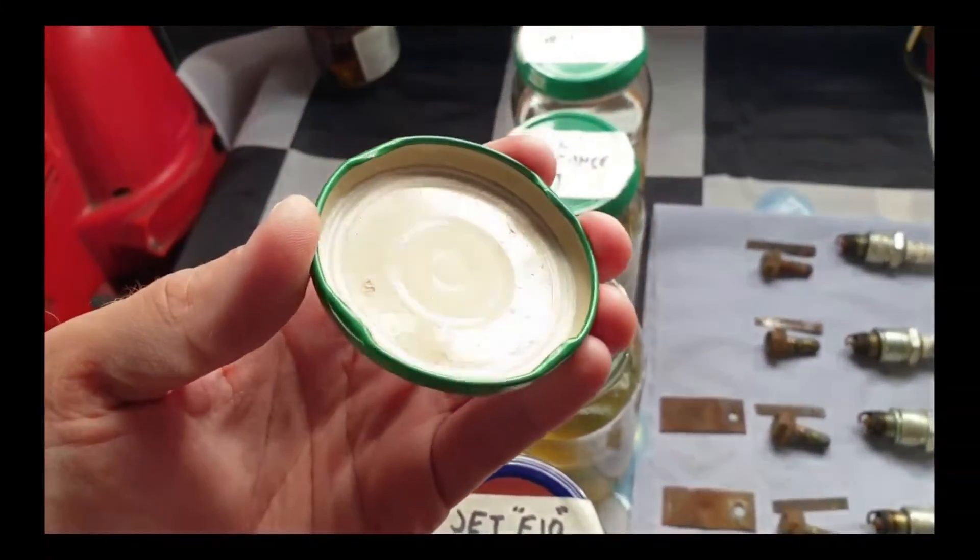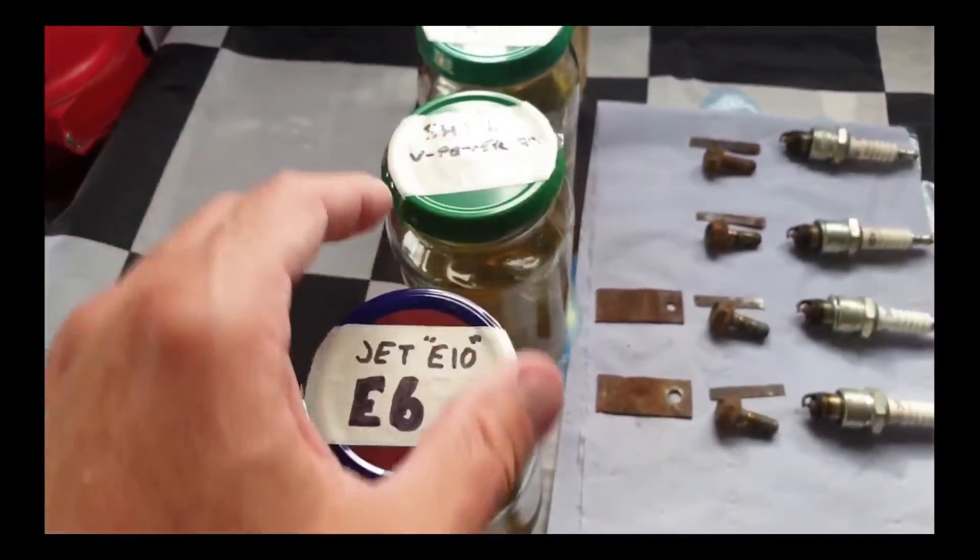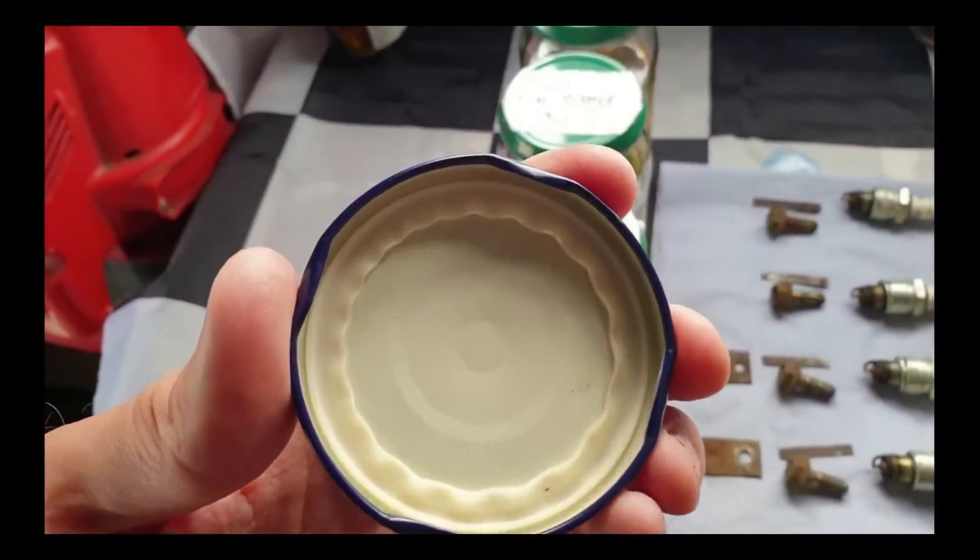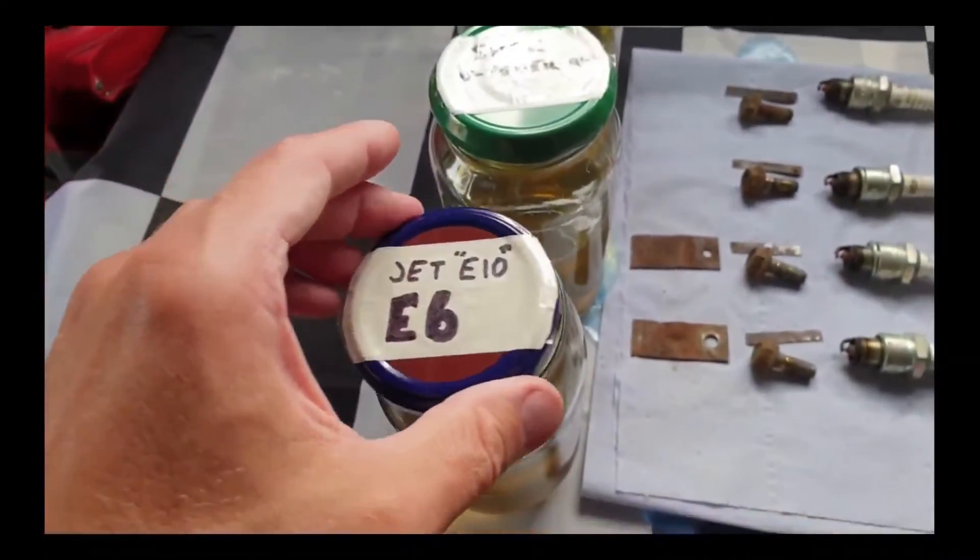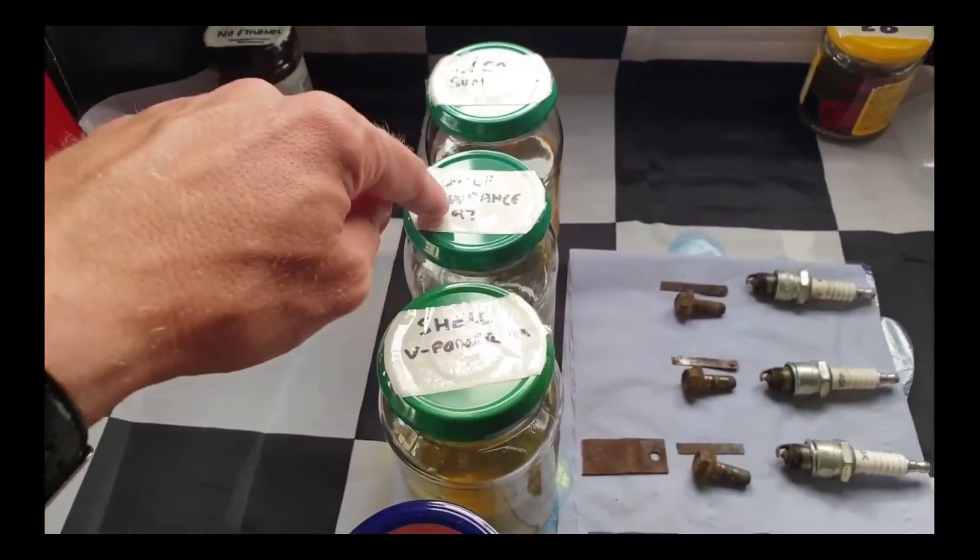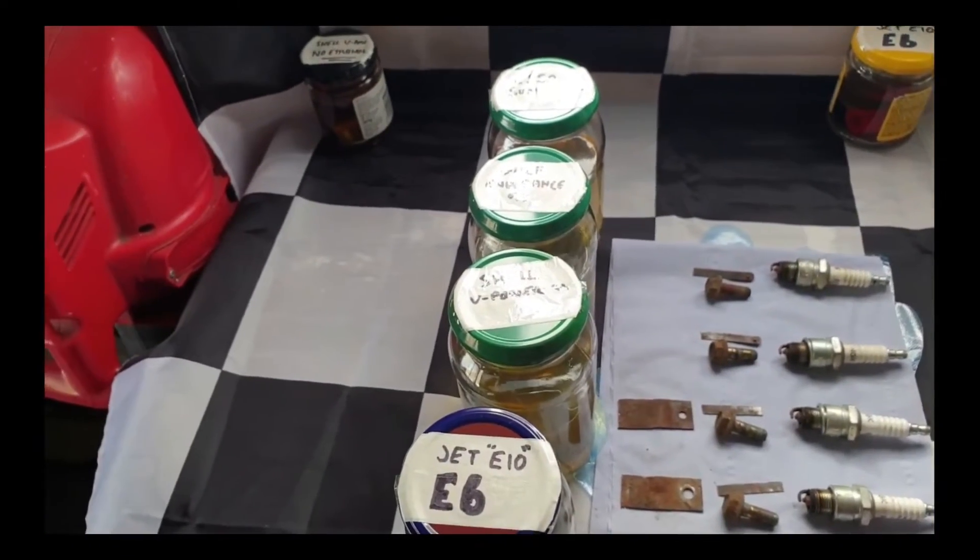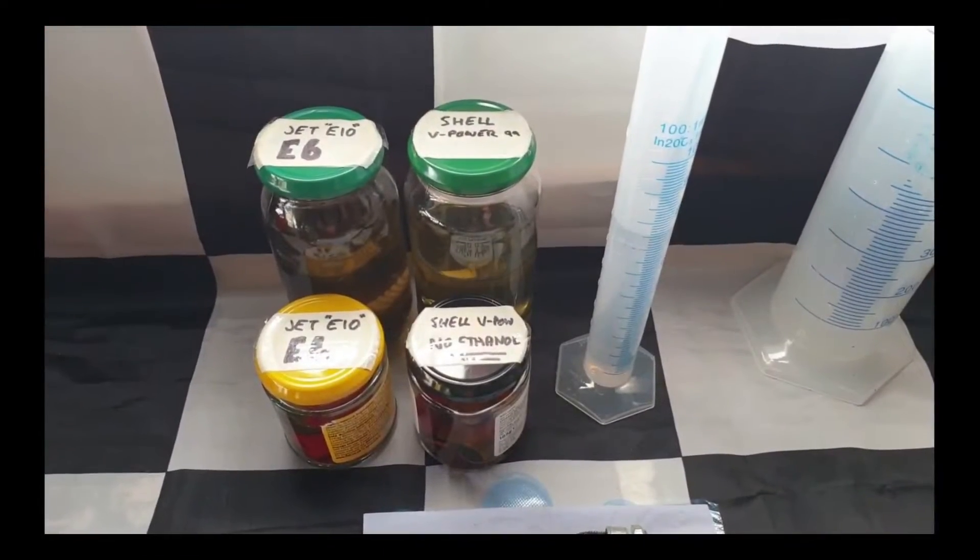Before that I noticed that the seal on one of these lids has swollen and is lifting away. It's on the ethanol blend but the jars are actually different types so I'm going to swap the lids over from this Golf sample and the labels too obviously. If the seal lifts on that one as well then we know something's up.